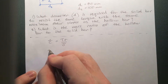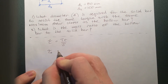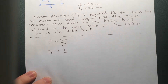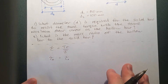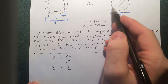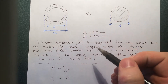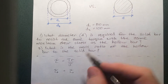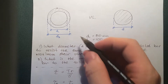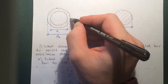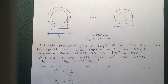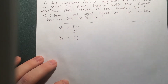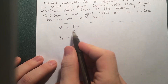We're going to say tau for hollow equals tau for solid, and these need to be the maximum values. For the solid one, it's maximum when we take the radius to be the outer radius D/2. For the hollow one, it's maximized at the very outer piece, so we use D2/2 to get the radius. So let's plug this equation in with these values.